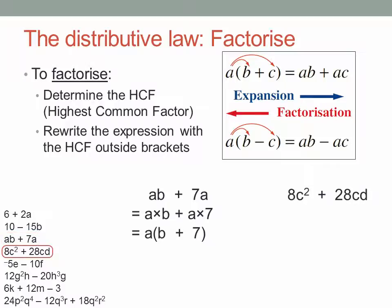Here's a slightly harder one. 8c squared plus 28cd. What's the highest common factor? Look carefully. There's both a numeric and variable component. 8 and 28 are both divisible by 4, and both terms also have c as a factor. So the highest common factor in this case is 4c. 8c squared is 4c times 2c. 28cd is 4c times 7d.